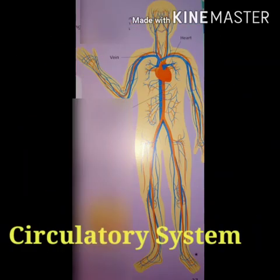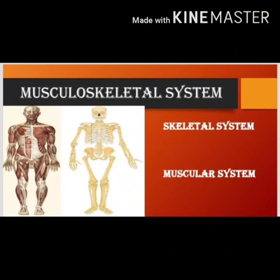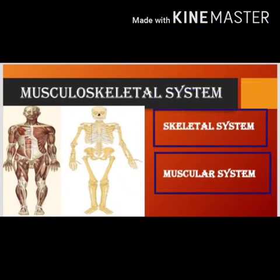Jaise ki aap ne dekha hai, circulatory system mein heart, blood, aur blood vessels hain. Human body kai systems par mushtamil hai. Is unit mein hum musculo-skeletal system ko study karin ge. Musculo-skeletal system, skeletal aur muscular system ka combination hota hai.